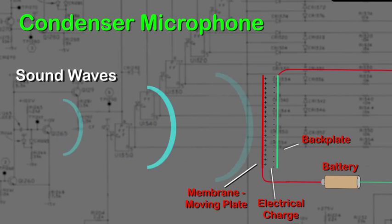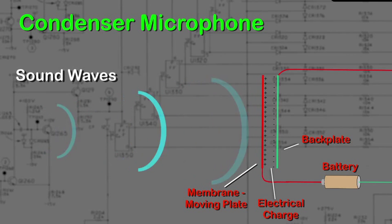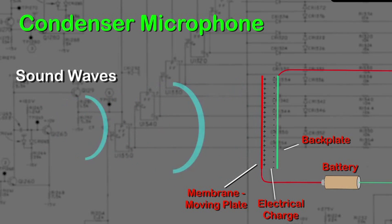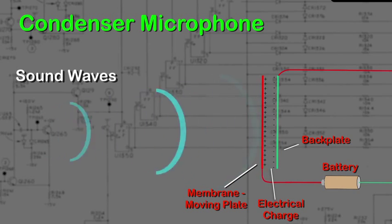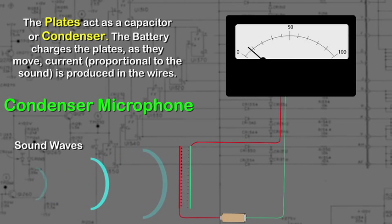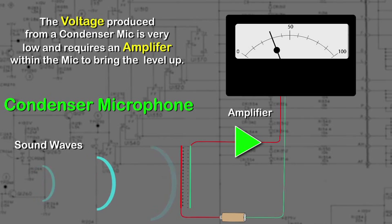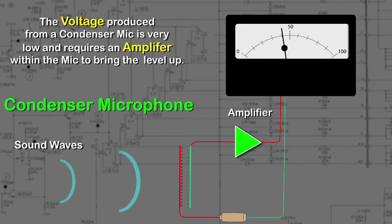In a condenser microphone, two plates — a stationary backplate and a movable membrane — make up the capacitor. Between these two is an electrical charge, just like a capacitor. The charge is produced by either a battery contained within the microphone or from a phantom power supply feeding the mic. As the sound waves press against the movable membrane, they press the two plates closer together and the capacitance changes correspondingly, changing the voltage output from the capacitor. Because this condenser produces a very small voltage, an amplifier is required within the microphone to bring it up to a higher level. The same battery or phantom power supply can also power this amplifier.